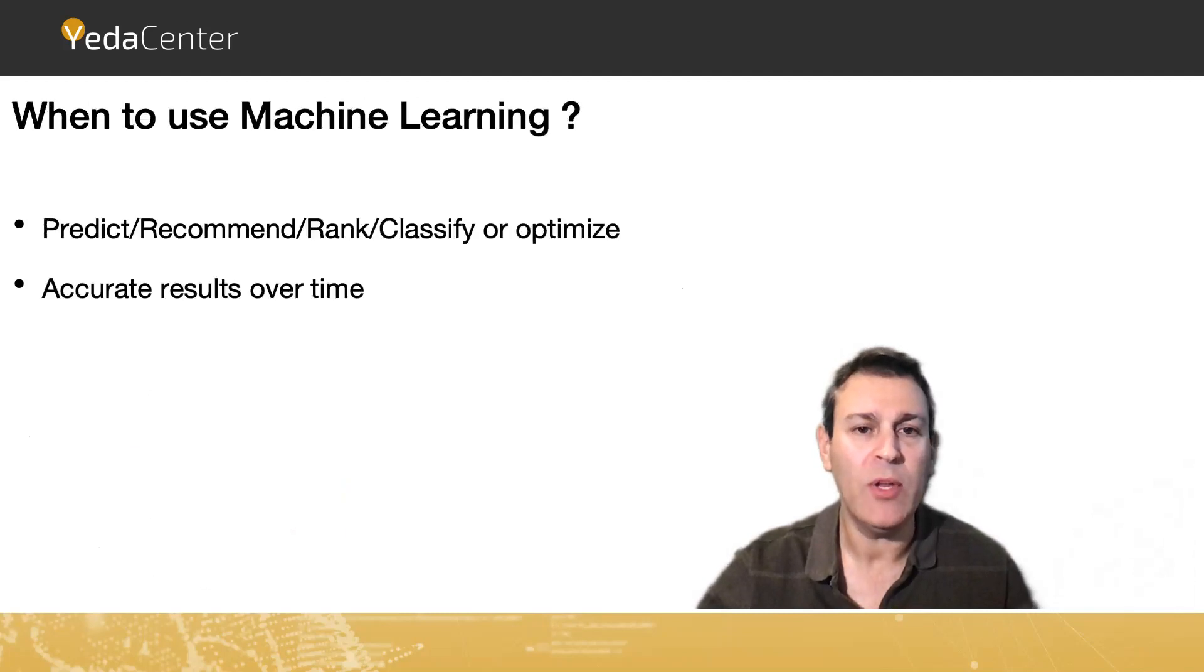So when will we use machine learning? We'll use it when we want to predict, to recommend, to rank, to classify. Basically we want to optimize something. And machine learning has the word learning in it because it learns. And this is very important if we want to do some complex computation on a complex mathematical function, then we'll use machine learning.